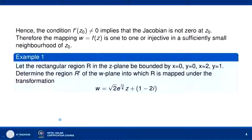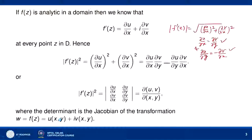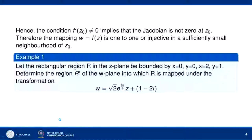Hence, if f'(z0) ≠ 0, then the Jacobian of (u,v) with respect to (x,y) at the point (x0, y0) will be non-zero, and this implies that the mapping w = f(z) is one-to-one or injective in a sufficiently small neighbourhood of z0.